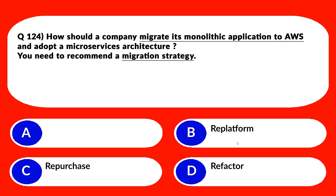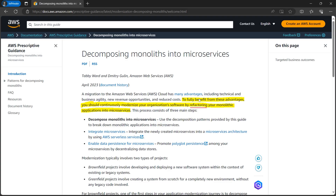Replatform does not break down the application into microservices, which limits the benefits of cloud-native development — so B is also incorrect. Option C says 'Repurchase' — this involves discarding the existing application and buying a new one from a third-party vendor that runs on AWS. This does not leverage the existing code base or business logic, which can result in high cost, loss of functionality, and vendor lock-in. We eliminate this as well.